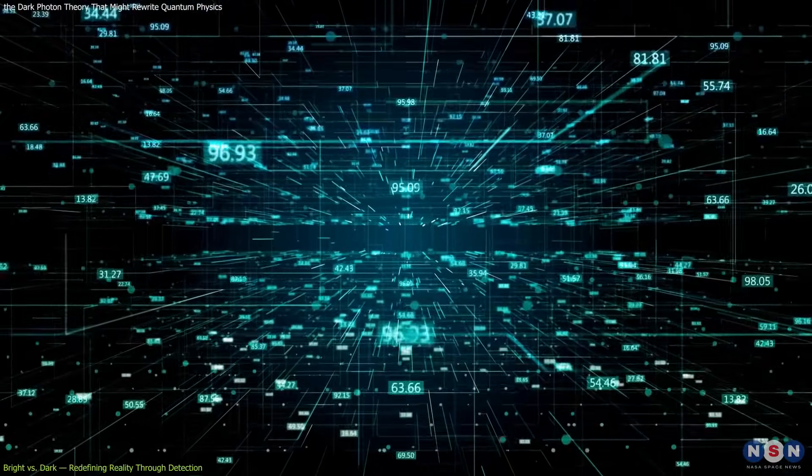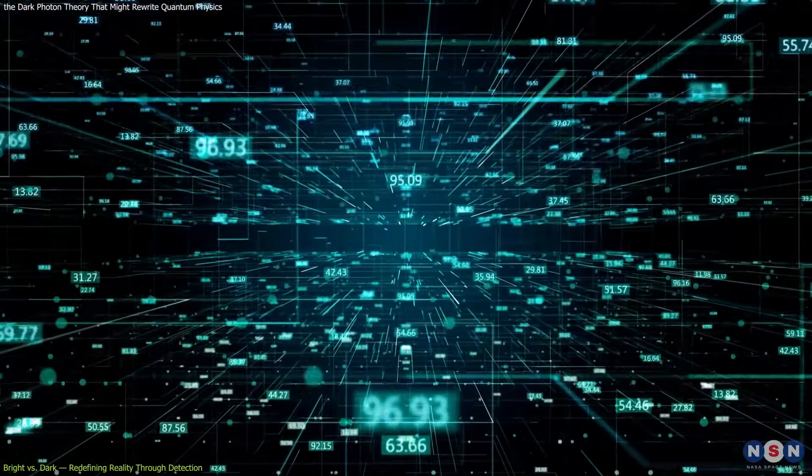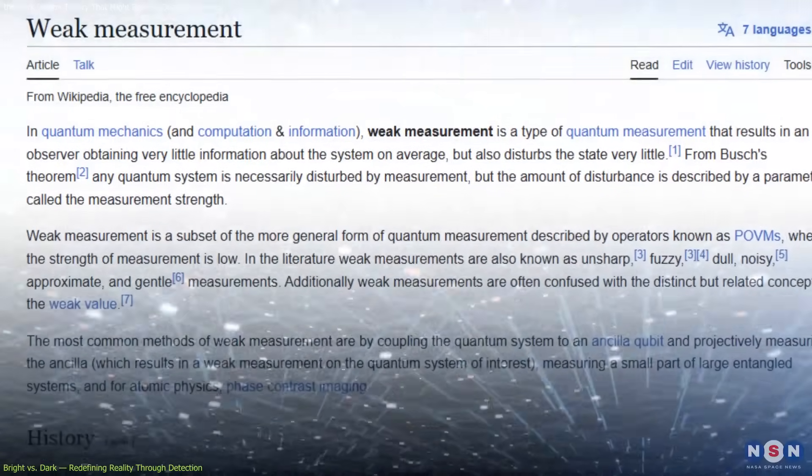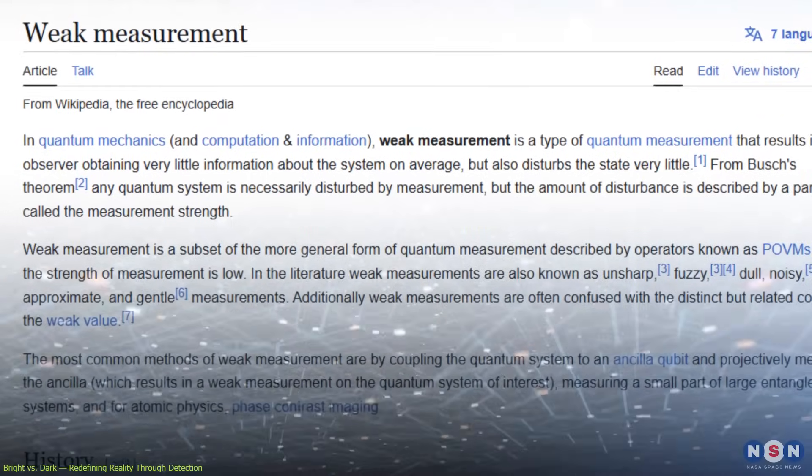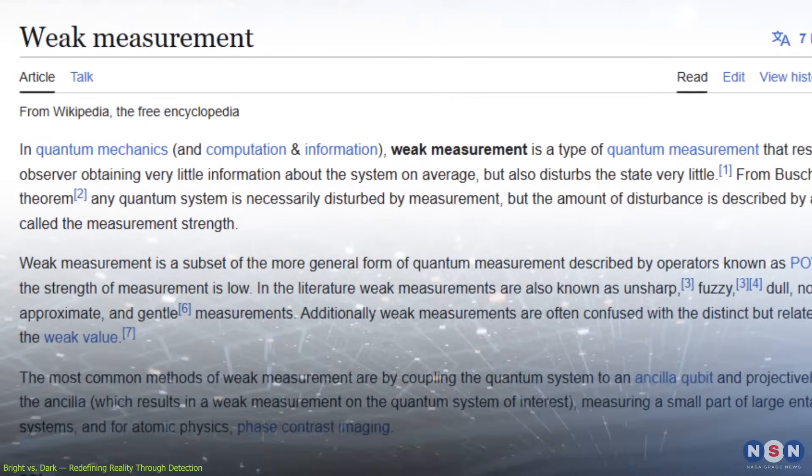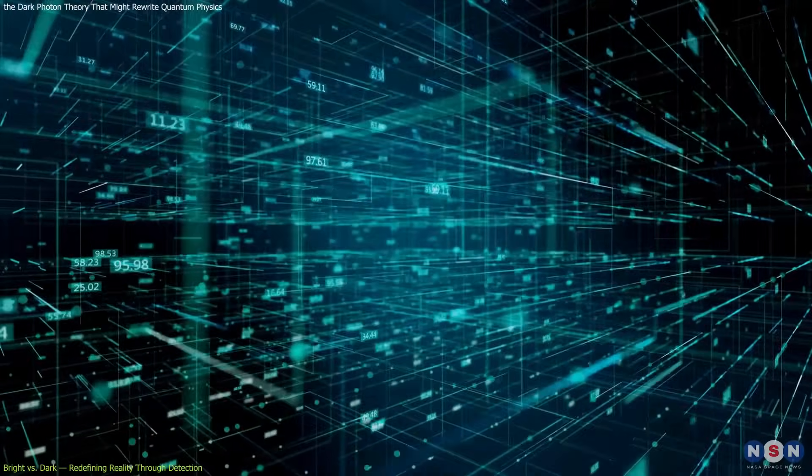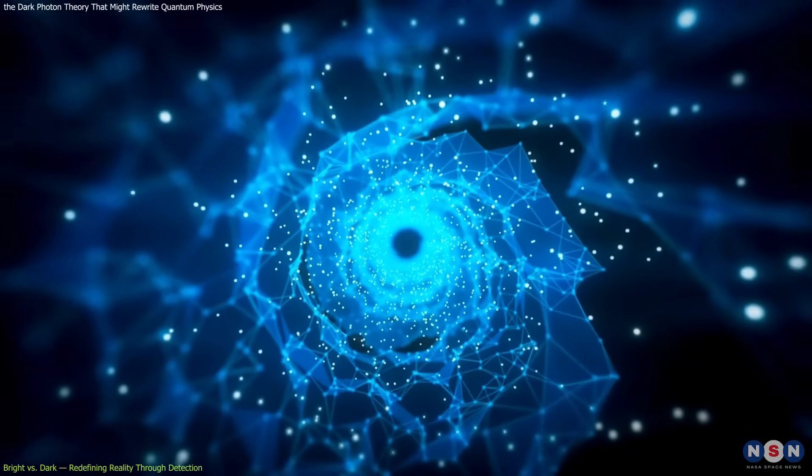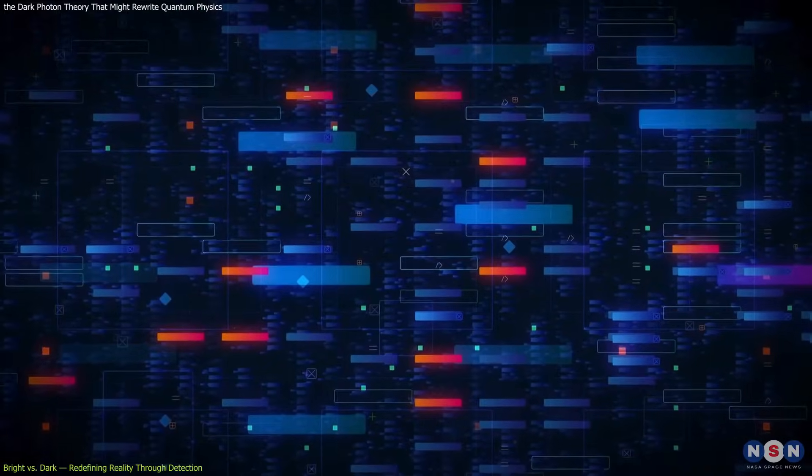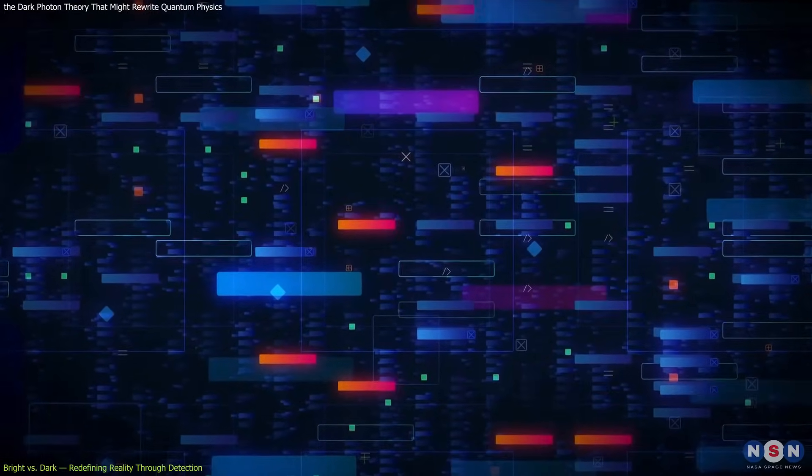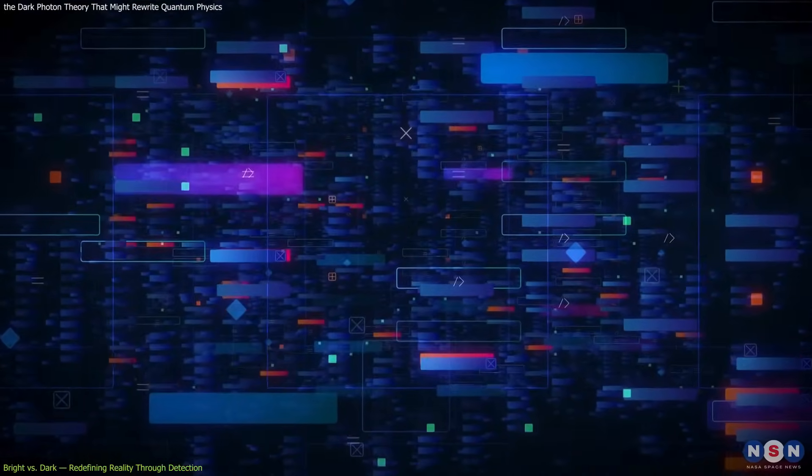This view echoes recent developments in quantum information science. Weak measurement techniques, which allow scientists to extract limited data without fully collapsing a system, show that observation can be subtle. Instead of all or nothing outcomes, measurement can tease out information gently, revealing hidden layers of a quantum system.